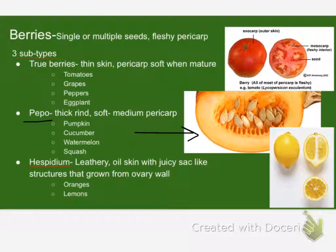The third kind of berry is hesperidium. So if it's got a leathery, oily skin — so who here has peeled one? We'll look at the inside of a grapefruit tomorrow and find those little juicy sacks, which are actually outgrowths from the ovary wall. So if you've eaten an orange or a grapefruit or, heaven forbid, a lemon plain — who eats lemons plain?